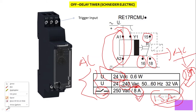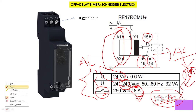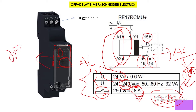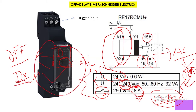On the front of this timer we have time settings. With the help of these two knobs we can set the off-delay time. We will talk later about how to actually set the timer. Now let's move to the wiring.